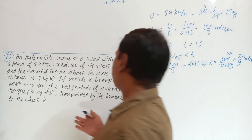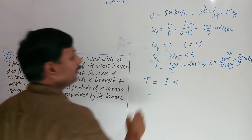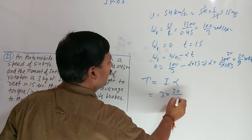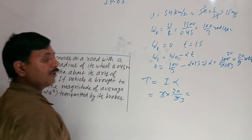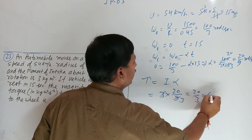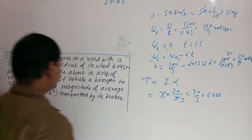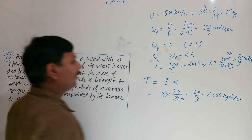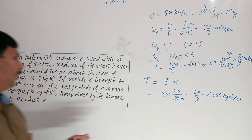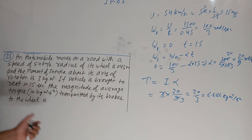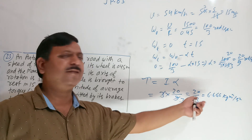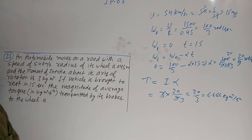The torque equals I times alpha. With I equals 3 kg·m² and alpha equals 20/9 rad/s²: torque equals 3 times 20/9 equals 60/9 equals 20/3, which is approximately 6.67 N·m. This is the magnitude of average torque transmitted by the brakes. The answer is 6.67 (or 6.666) N·m.